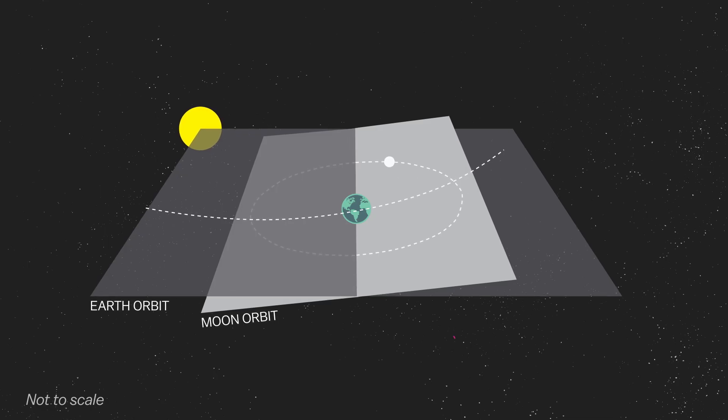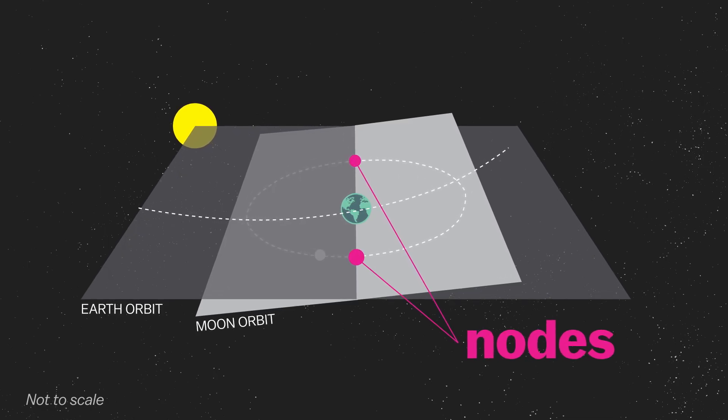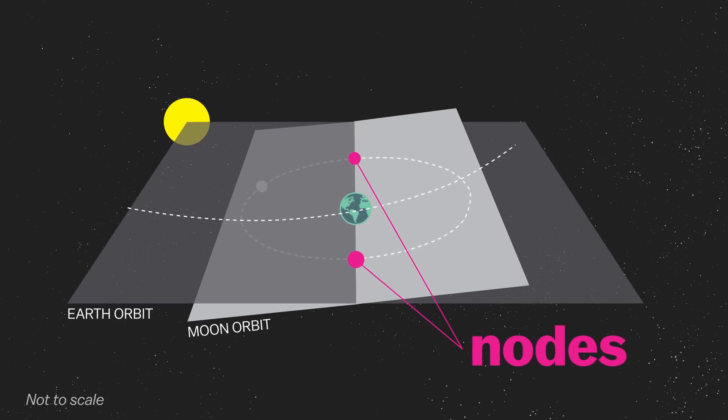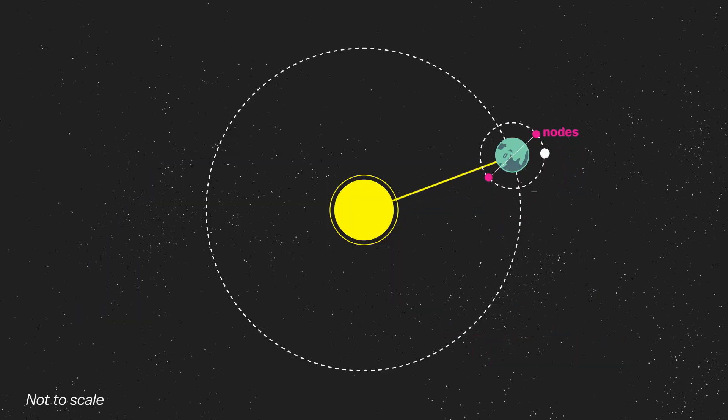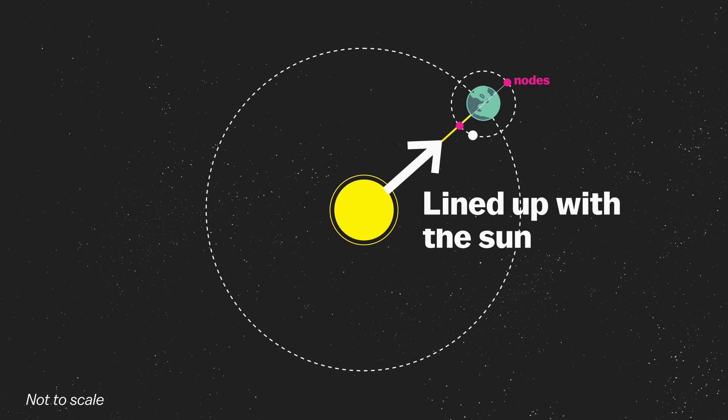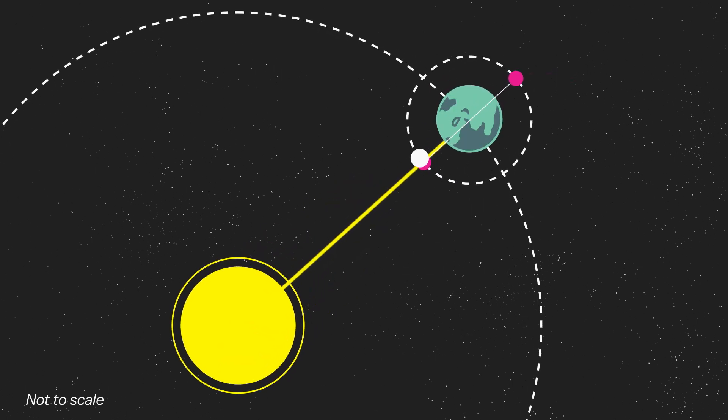So why do we ever get eclipses? Because there are two points where the moon's orbit crosses the sun's plane, called nodes. And as the Earth moves along its orbit, these points line up with the sun about twice a year. If the moon is between the sun and Earth at that time, we get a solar eclipse. If it's behind Earth at that time, we get a lunar eclipse.